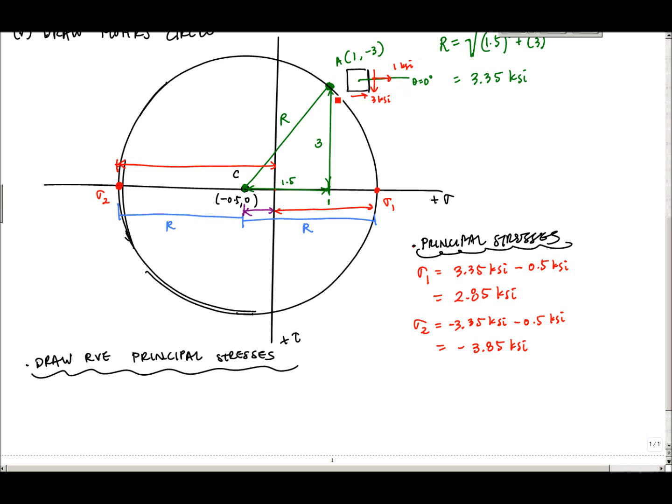Now what we want to know is what does this face look like. In order for me to go from A to my major principal stress, I need to rotate an angle right here, I'll call this alpha. That angle alpha is just the inverse tangent, so alpha is tan inverse of opposite over adjacent, 3 over 1.5, and that is 63.4 degrees.